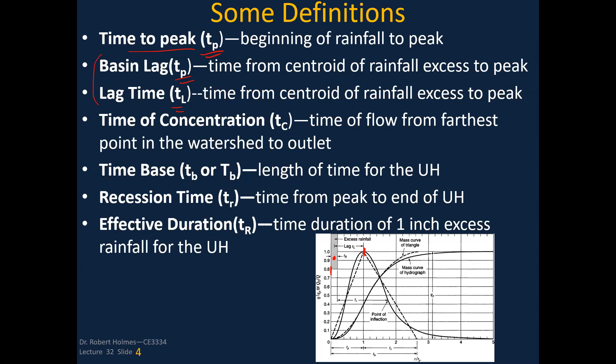There's time of concentration T_c, which is the time of flow from the farthest point in the watershed to the outlet. Then there's the base time, which is the base amount of time from when the hydrograph first responds to the excess rainfall to when it stops responding. There's a recession time, which is from the time of peak to the end of the unit hydrograph. And then there's the effective duration, which is the time it takes to get that one inch of excess rainfall on the watershed.